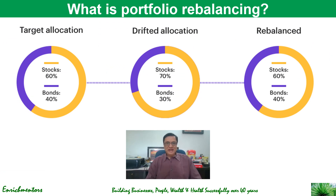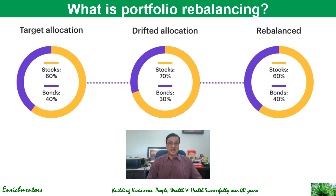Portfolio rebalancing is this: based on your risk profile and opportunities available, you had a target allocation. For example, you said you would invest 60% in stocks and 40% in bonds. So you narrowed down to basically two investments — stocks and bonds — and your asset allocation ratio was 60/40. That is your target allocation.